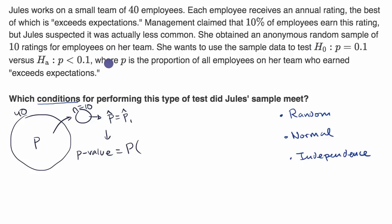And in this particular case, because she suspects that not 10% are getting the exceeds expectations, this would be the probability of your sample statistic being less than or equal to the one that you just calculated for a sample size of n equals 10, given that your null hypothesis is true.